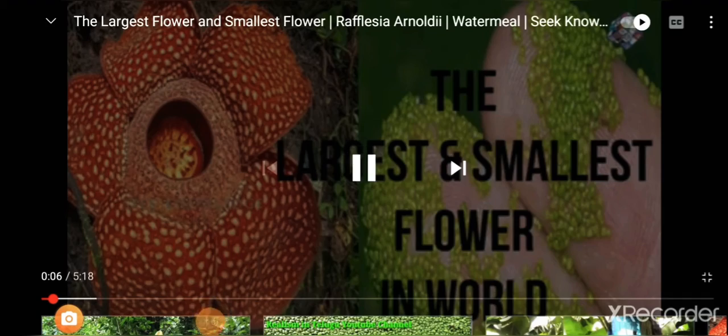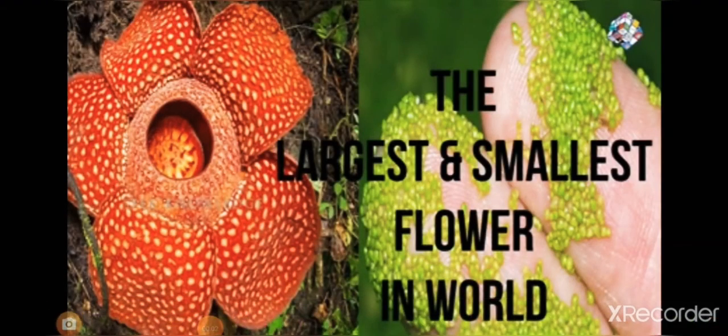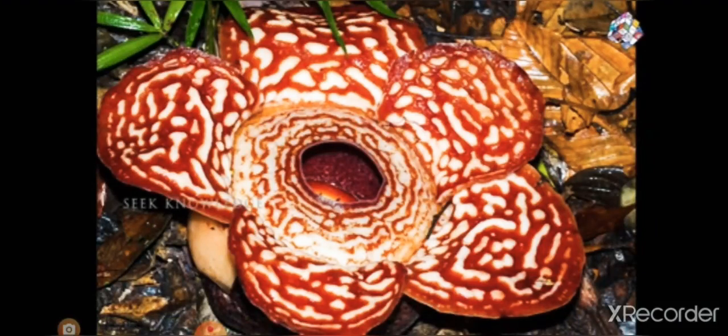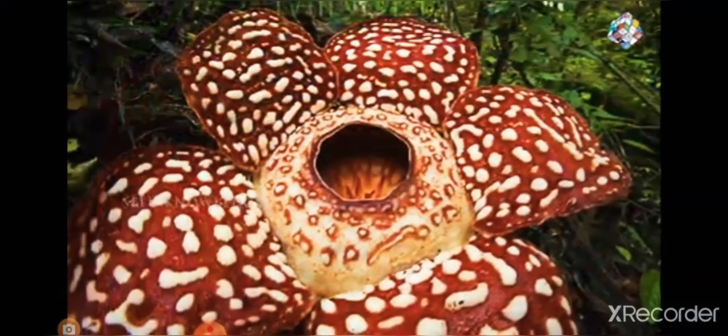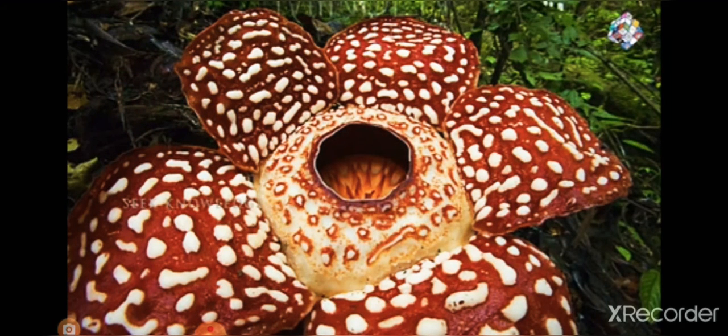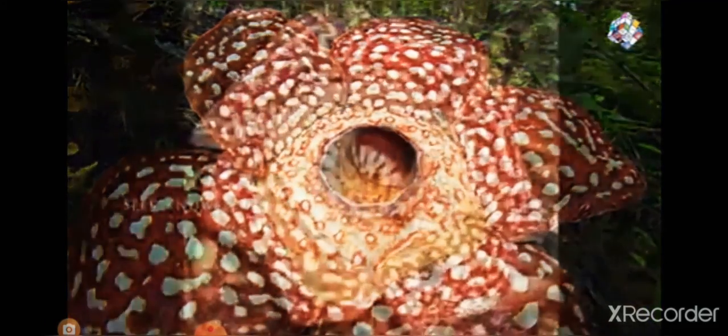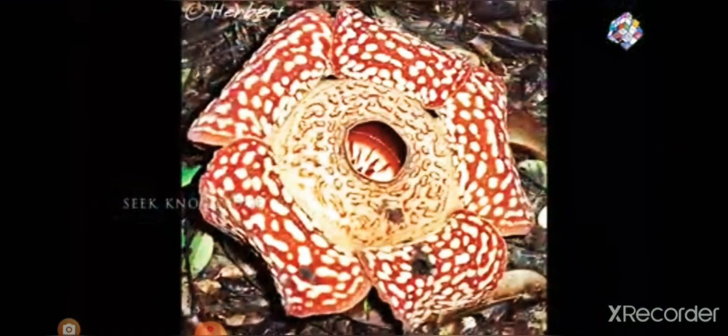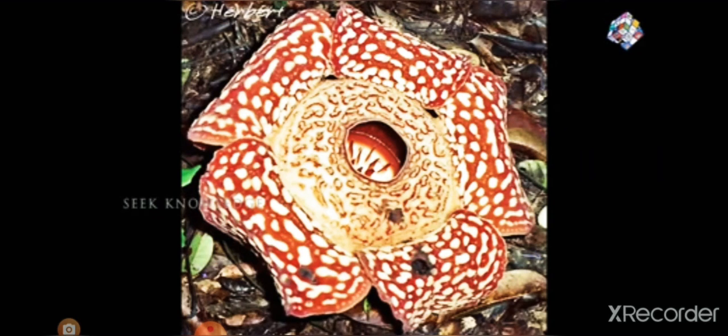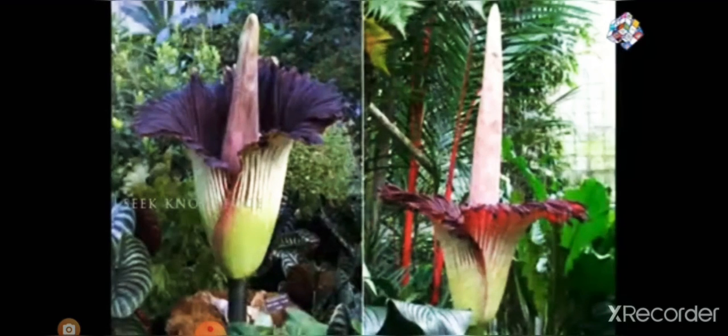The largest and smallest flower in the world. Rafflesia arnoldii, commonly called the corpse lily, is a species of flowering plant in the parasitic genus of Rafflesia. It is noted for producing the largest individual flower on earth. It has a very strong and unpleasant odor of decaying flesh, earning it the nickname corpse flower. It is endemic to the rainforests of Sumatra and Borneo.